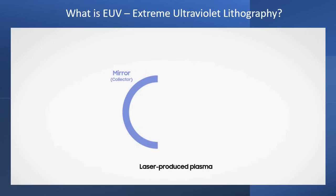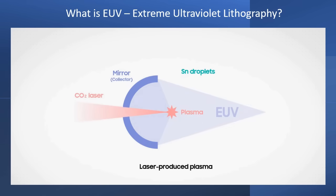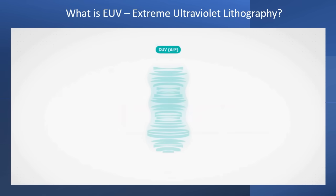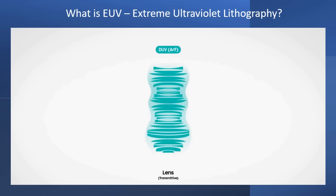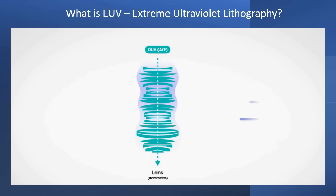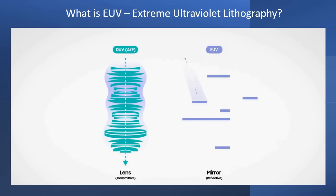While ArF light comes directly from a laser, EUV light is created by first shooting a CO2 laser at falling tin to generate plasma. The light from the plasma is then focused using mirrors to produce EUV light. The downside of using shorter wavelengths is that the light is easily absorbed while passing through air and lenses. The EUV lithography process solves these issues by operating with mirrors in a vacuum, and minimizing light absorption is crucial to providing sufficient light for photoresist patterning.